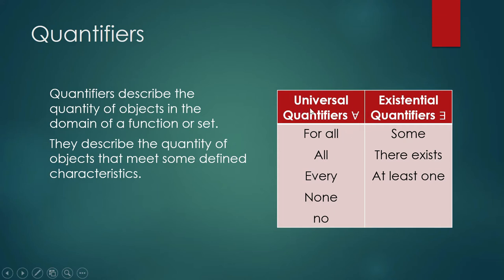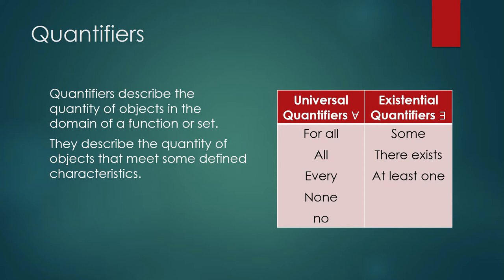The first type is universal quantifiers. The key word here is 'universal' — meaning everything. The words and phrases that go along with universal quantifiers are: for all, all, every. Also 'none' and 'no' are universal quantifiers, although written in negation form. Our symbol for the universal quantifier is the upside-down letter A. For example, in properties of real numbers: for all real numbers x, when you multiply x by zero, the product is zero — that is a universal statement.